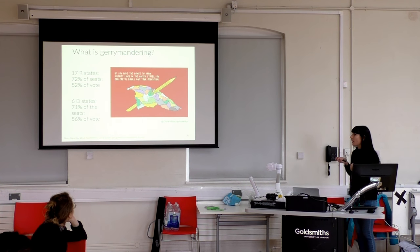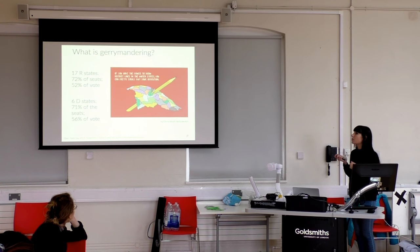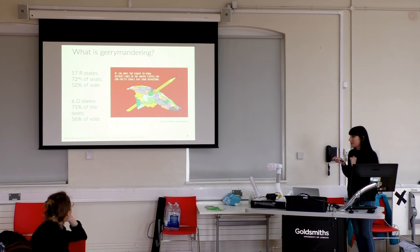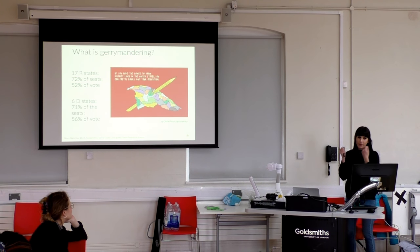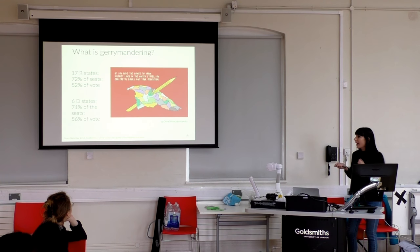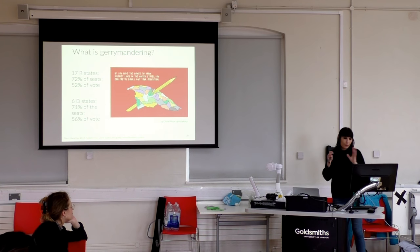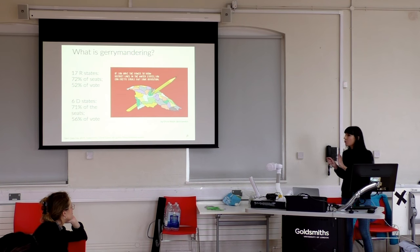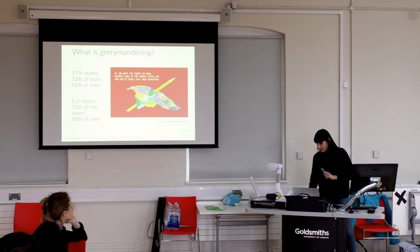In the US, where most of the gerrymandering I'll discuss happens: in 17 Republican-controlled states, they have 72% of the seats but only 52% of the votes. So only 52% of people voted Republican, but they ended up controlling a much larger share of seats. The same is true for Democrats — in six states they control 71% of the seats but only 56% of the votes. It's a real problem with the whole system, and it happens as a byproduct of the way the system works regardless of which party you prefer.